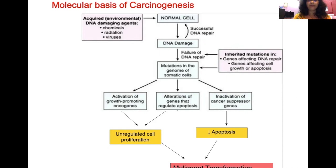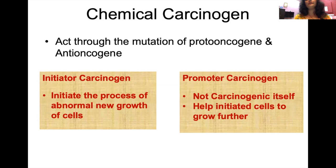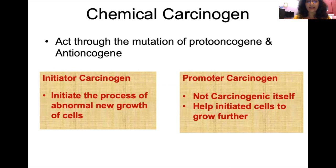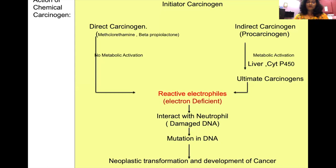Chemical carcinogens act through mutation of proto-oncogenes and anti-oncogenes. They are of two types: initiator carcinogens and promoter carcinogens. Initiator carcinogens are electrophiles that initiate the process of abnormal cell growth. Promoter carcinogens are not carcinogenic themselves, but help initiated cells grow further. Initiator carcinogens are further categorized as direct carcinogens, which do not require metabolic activation and are reactive electrophiles (electron-deficient chemicals) that are themselves reactive.